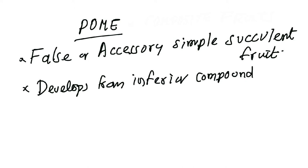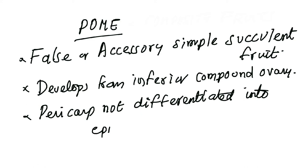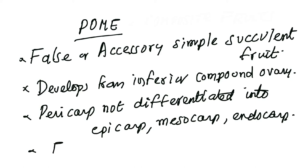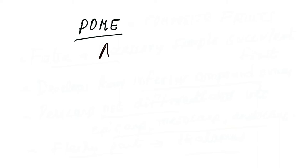A second important point is that a pome develops from an inferior compound ovary. Compound means that the ovary has different sections or chambers, and inferior means the position of the ovary relative to the floral parts is inferior. A third key point is that the pericarp is not differentiated into epicarp, mesocarp, and endocarp — the pericarp is found in a fused manner. A fourth important point is that the fleshy edible part is the thalamus.